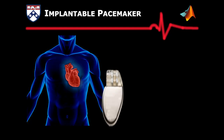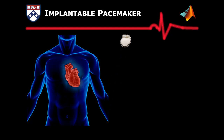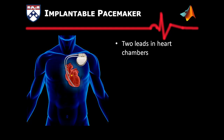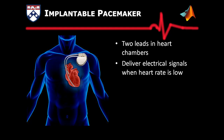Implantable pacemaker has been developed to treat bradycardia. The pacemaker is implanted under the skin near the shoulder area. Two leads are inserted into the right atrium and ventricle through blood vessels. The lead senses the local electrical activity of the heart and delivers electrical pacing when the heart rate is low. The pacemaker holds such an important role that any malfunction of the device may result in serious injury or even death of the patient.